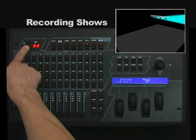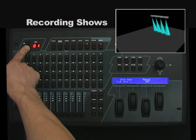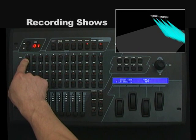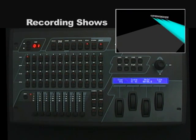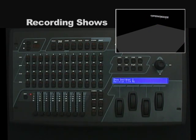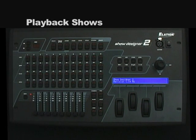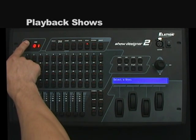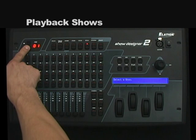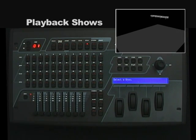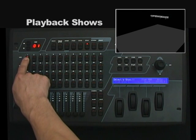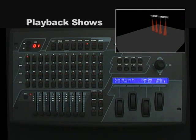To store the show, select the page where you wish to store it. I'll save this show as number one on page one, and the show will then have been stored. To exit, press the record button one time. To play back a show recorded into the Show Designer 2, press the show button so its LED illuminates, then scroll to the page containing the show using the up/down arrow buttons, and select the number switch for the show you wish to play back. The show will begin to play immediately.